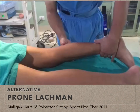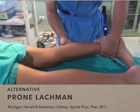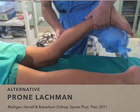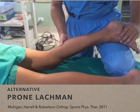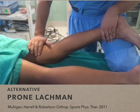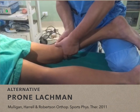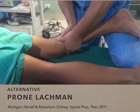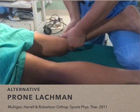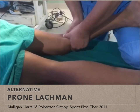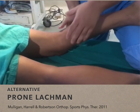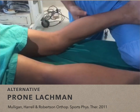Moreover, Mulligan et al. examined the proficiency in performing the prone Lachman test, which is another alternative as opposed to the classic Lachman. They showed that the prone Lachman yielded 78% positive predictive value while the classic Lachman yielded 28%. The prone Lachman test uses gravity to pull down the femur, which lets the examiner grip and displace the tibia with both hands and also feel the translation with both hands.